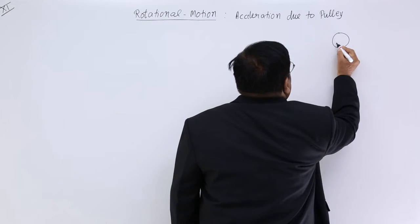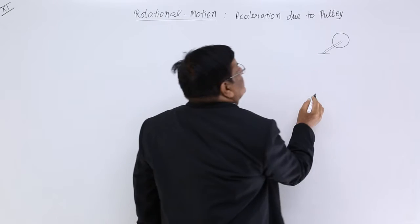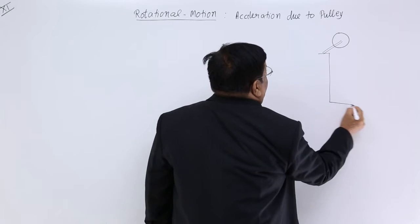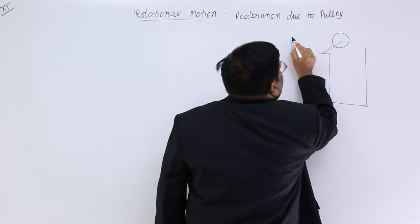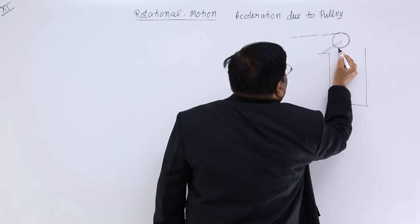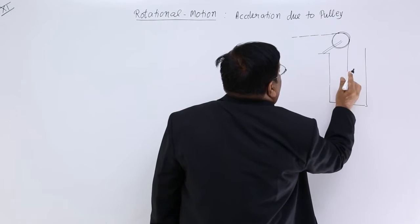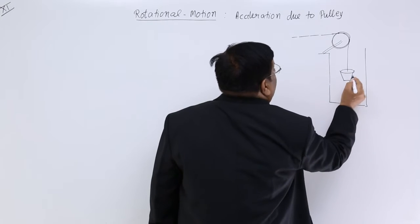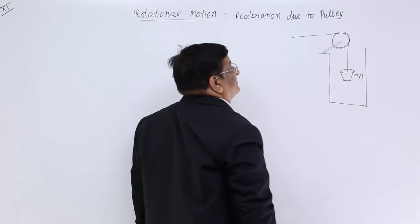Here is a pulley. This pulley may be resting on the wall of a well, and here we have the well. There is a string. This string rotates, and there is a bucket. Here is the bucket. This bucket has certain mass m.